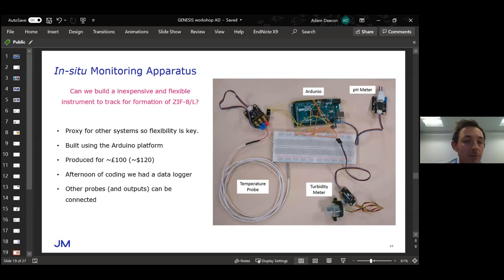One of the in-situ monitoring apparatus we used was based on the Arduino platform, a kind of microcomputer. It's a very nice platform to use because it's flexible and very cheap. In our case we've used a temperature probe, a pH meter, and a turbidity meter. A turbidity meter measures how turbid the water is, which is related to how much solid is in the solution you're measuring.